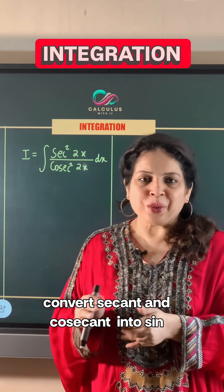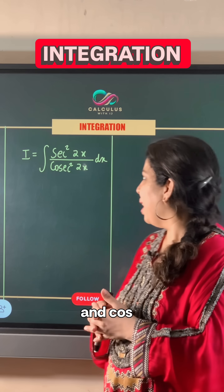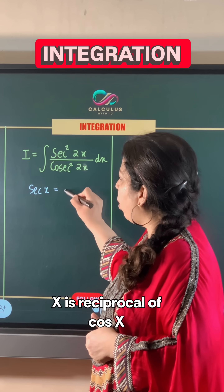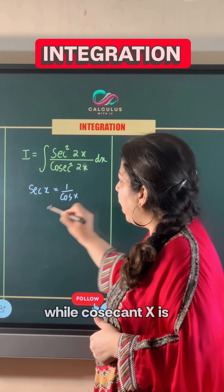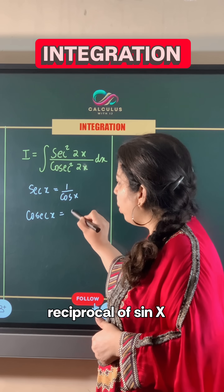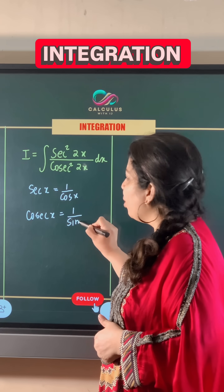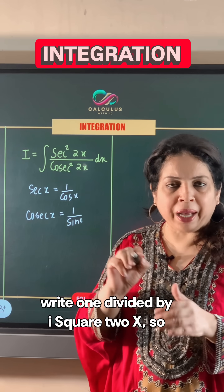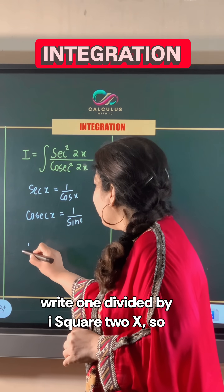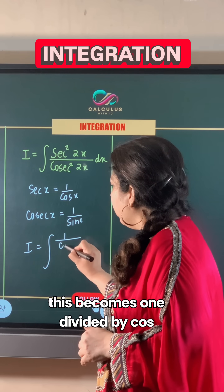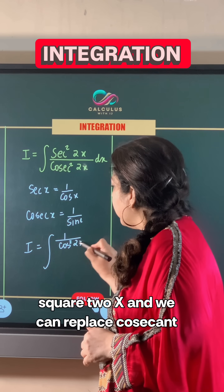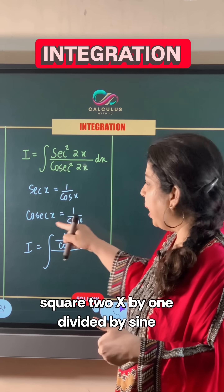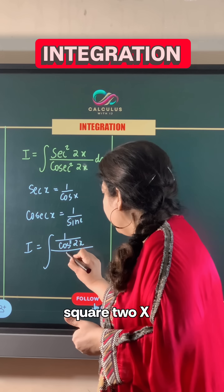Let's convert secant and cosecant into sine and cos. Secant x is the reciprocal of cos x, while cosecant x is the reciprocal of sine x. So instead of secant squared 2x, we can write 1 divided by cos squared 2x, and we can replace cosecant squared 2x by 1 divided by sine squared 2x.